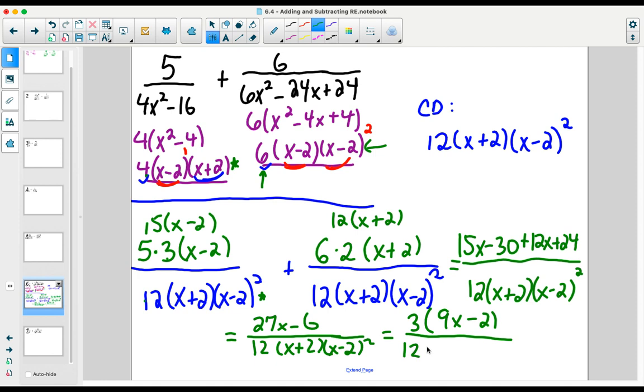And the advantage of leaving the denominator already factored is that I don't have to worry about doing it again. I see the three simplifies with the 12, leaving behind a four. Which gives me a final solution of 9x minus 2 in the numerator, and then the denominator of 4(x+2)(x-2)².